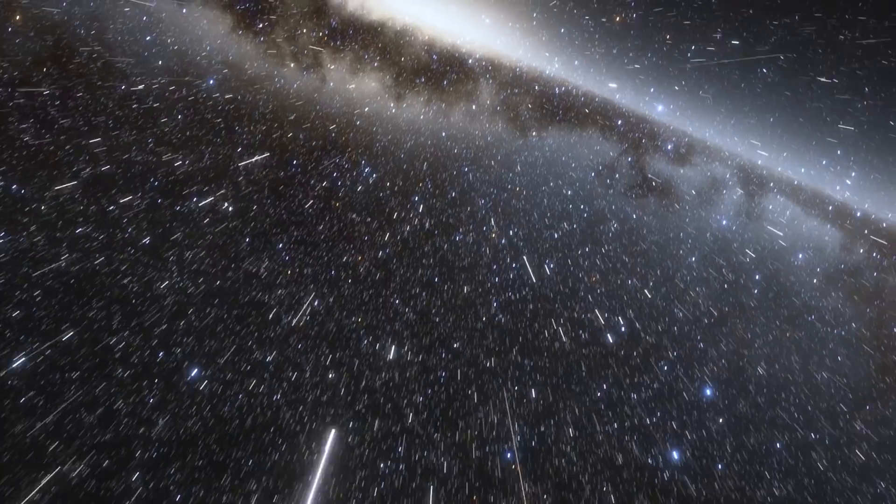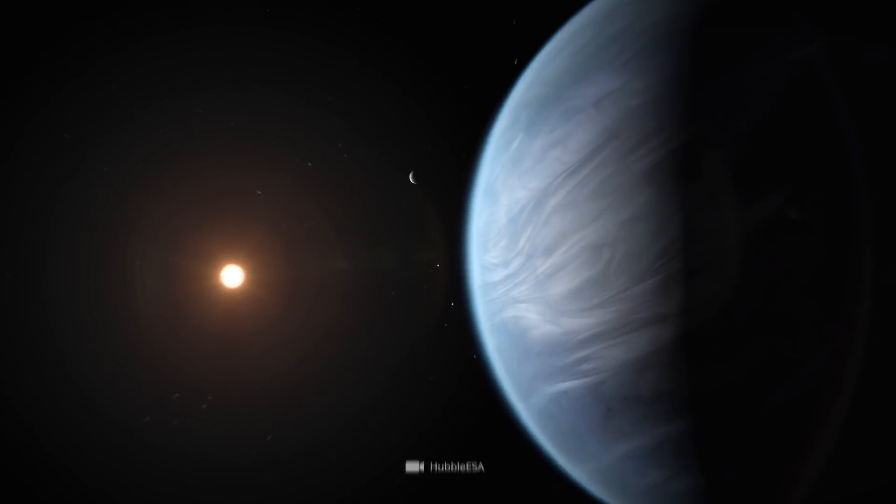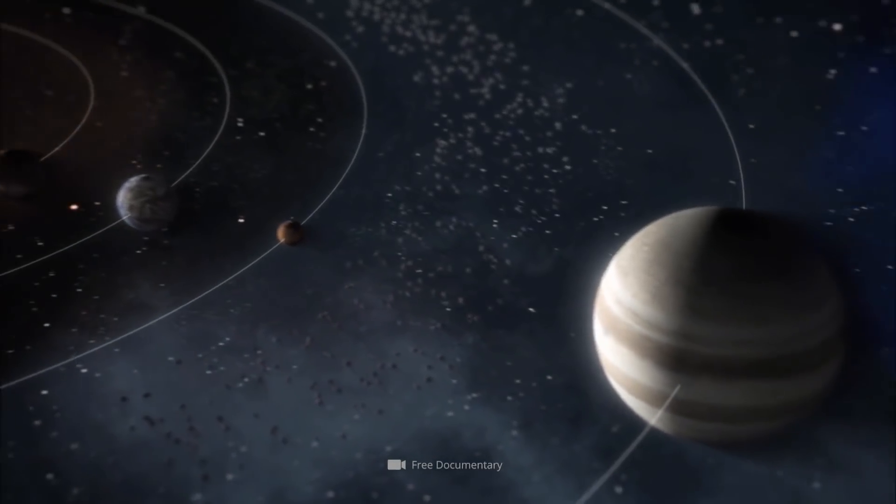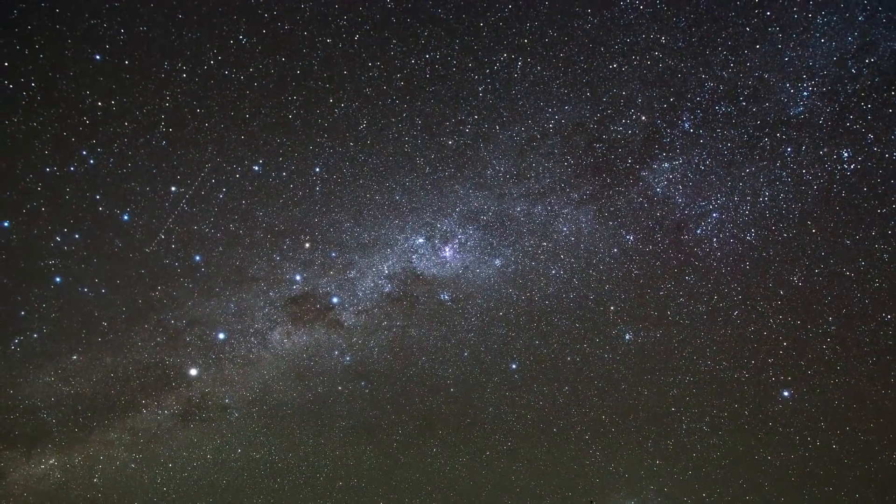In the past year alone, researchers succeeded in detecting 201 new exoplanets. This brings the list of planets located outside our home solar system and gravitationally bound to another host star to over 4,900.